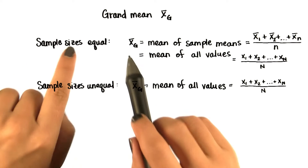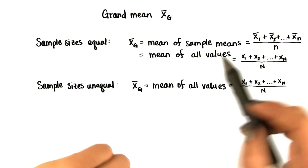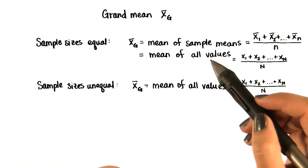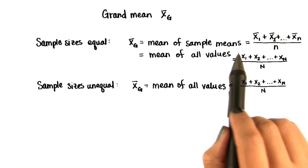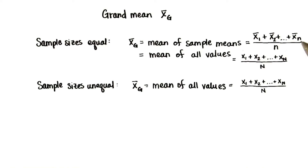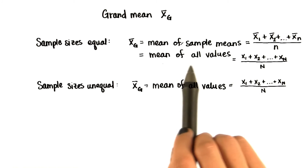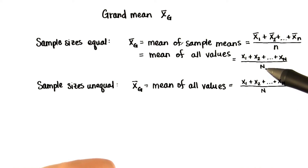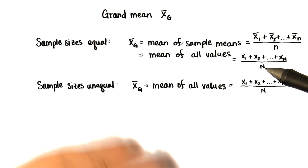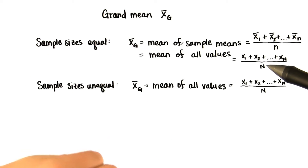When sample sizes are equal, the grand mean is the same as the mean of sample means, since there's an equal weight to each sample. And this is the same as the mean of all values, where capital N is the total number of values in all the samples.